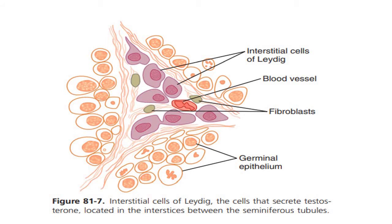In this slide you can see the basement membrane of the seminiferous tubules and the adjacent seminiferous tubules. In between them, in the interstitial space, lie the interstitial cells of Leydig — these are the cells which produce testosterone.